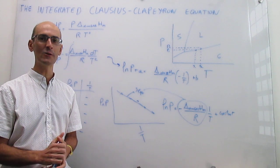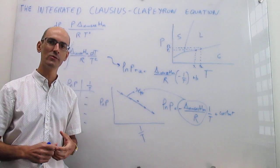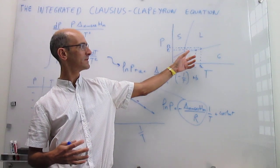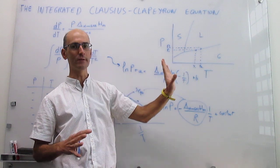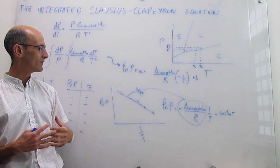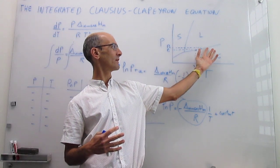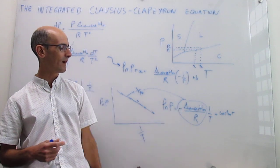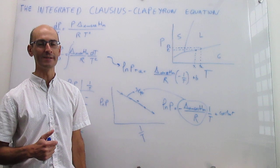To summarize: we have seen how to integrate the Clausius-Clapeyron equation to make predictions about points on a phase boundary from the knowledge of an initial point, or to use various measurements of vapor pressure as a function of temperature to determine with high accuracy what the enthalpy of the phase transition is.